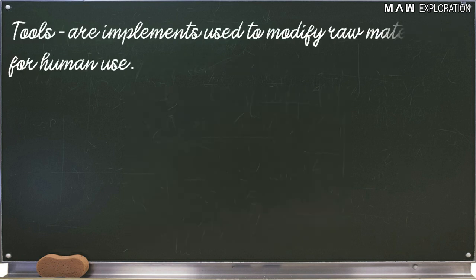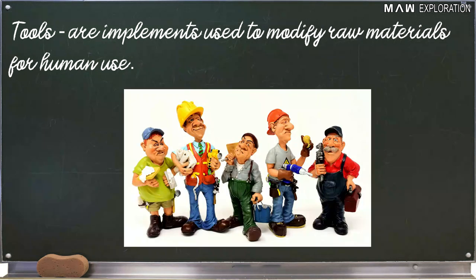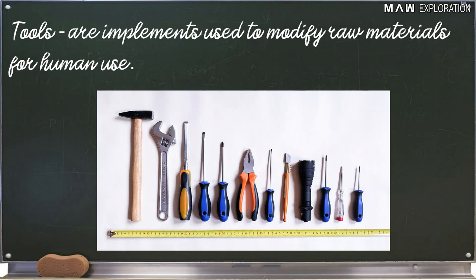Number eight, tools. Tools are devices or implements used to modify raw materials for human use. Here are some examples of tools we are going to use.